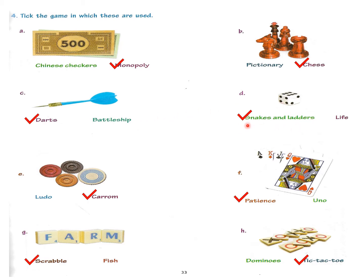Then snakes and ladders — in this we use a dice. This dice is used in snakes and ladders, so you will put a tick mark in snakes and ladders. Then here you can see these coins which are used in carom, a game played on a square board. So we will tick mark carom. Then you can see here cards, which are used in patience. Patience is the name of a card game.